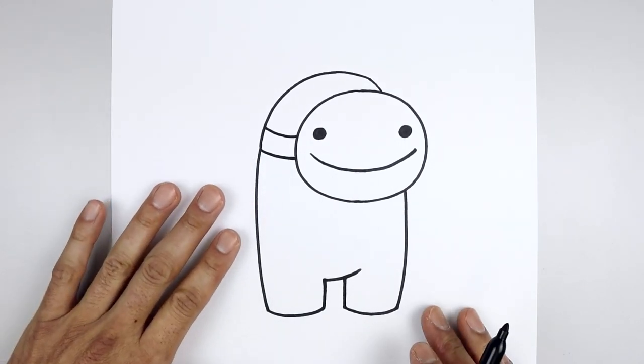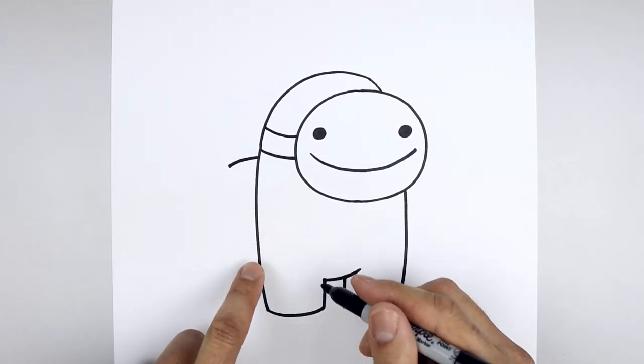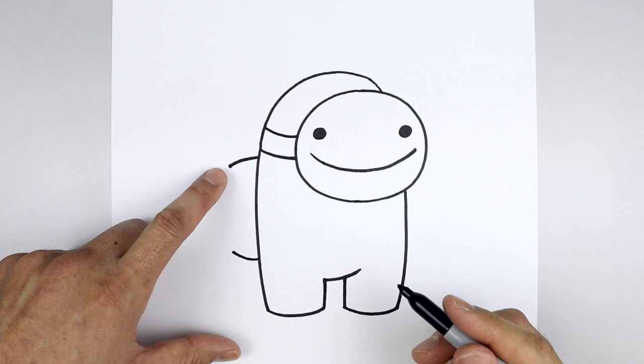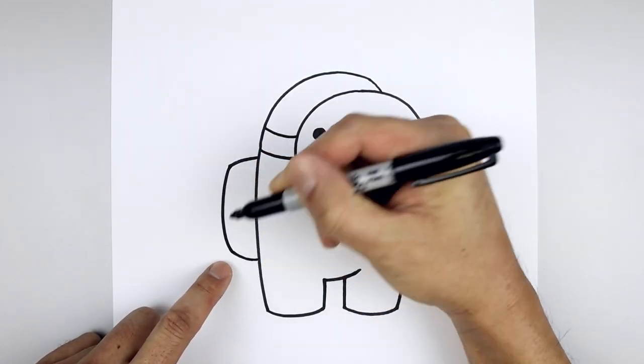And then we'll add the backpack on the left side. Starting from the top, go out and bend that down. Come down towards the bottom, go out and then up. Now connect the top and bottom with a curve. Go out, down and then in.